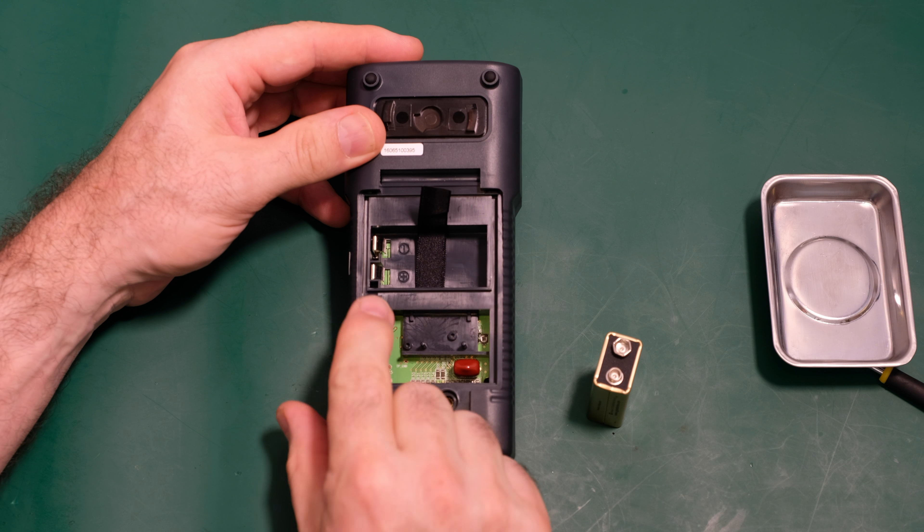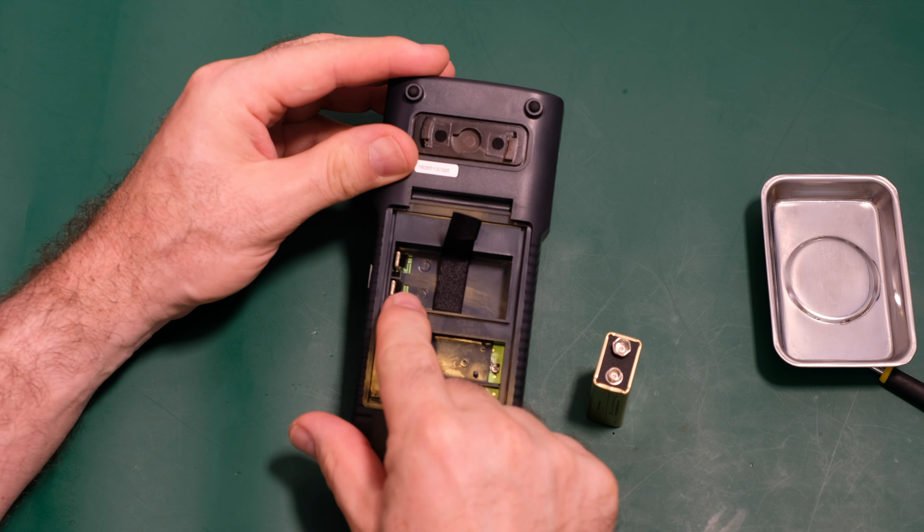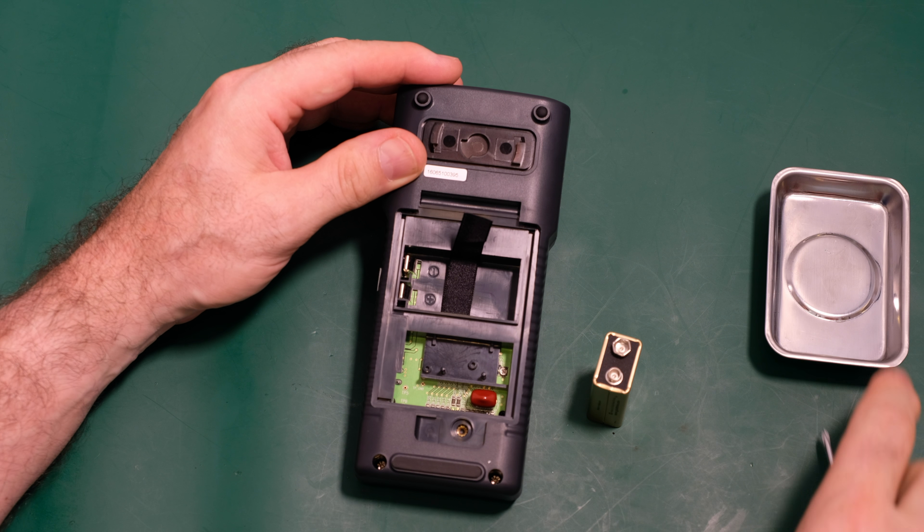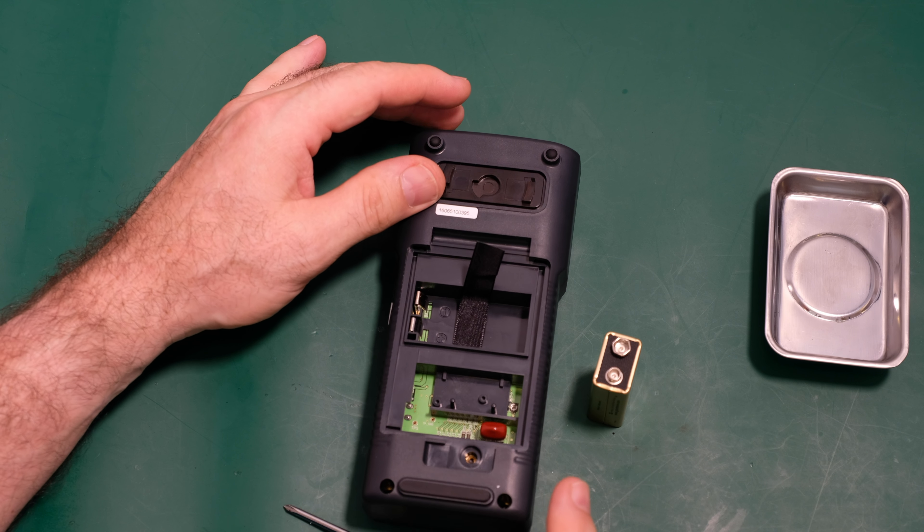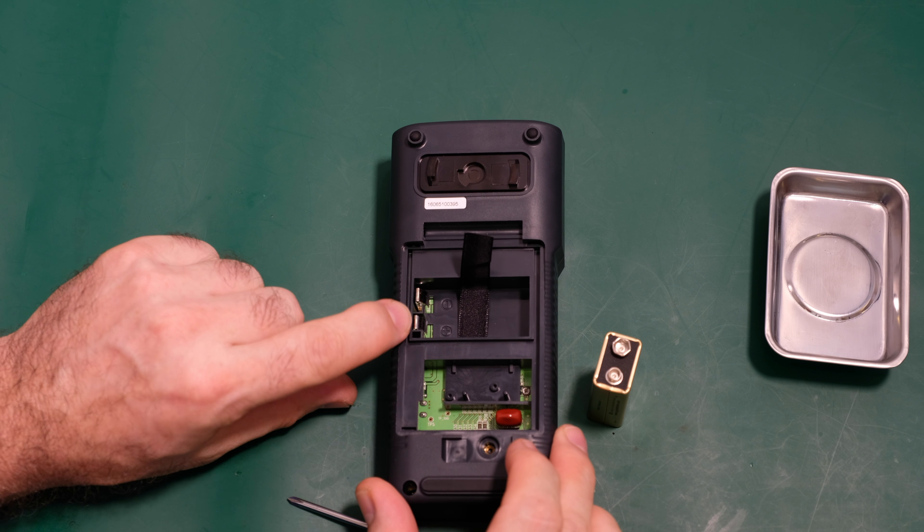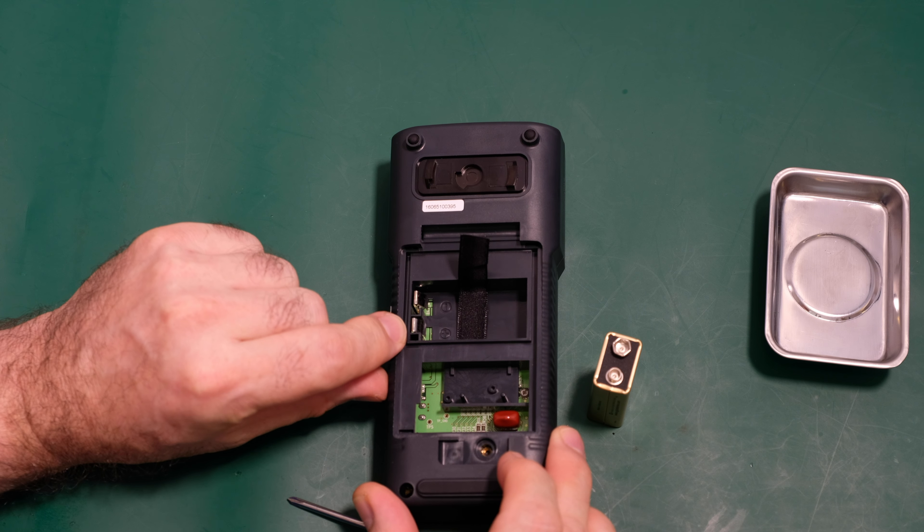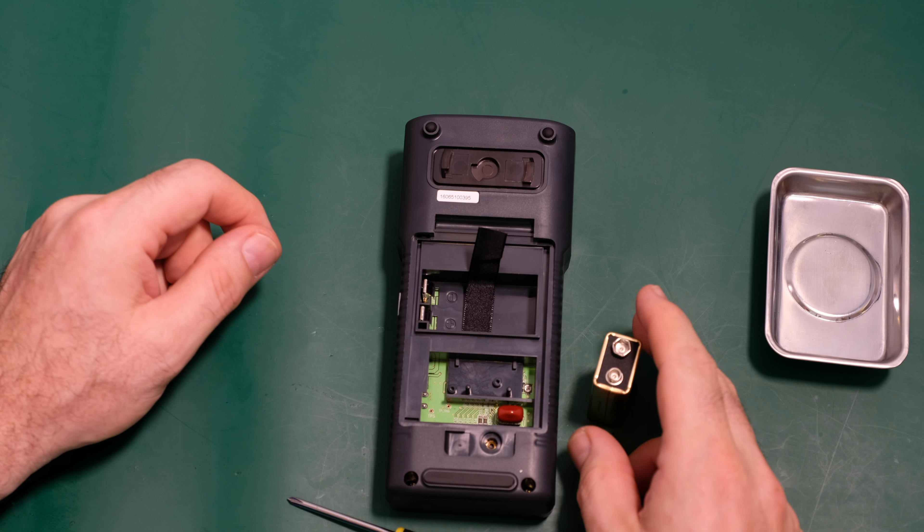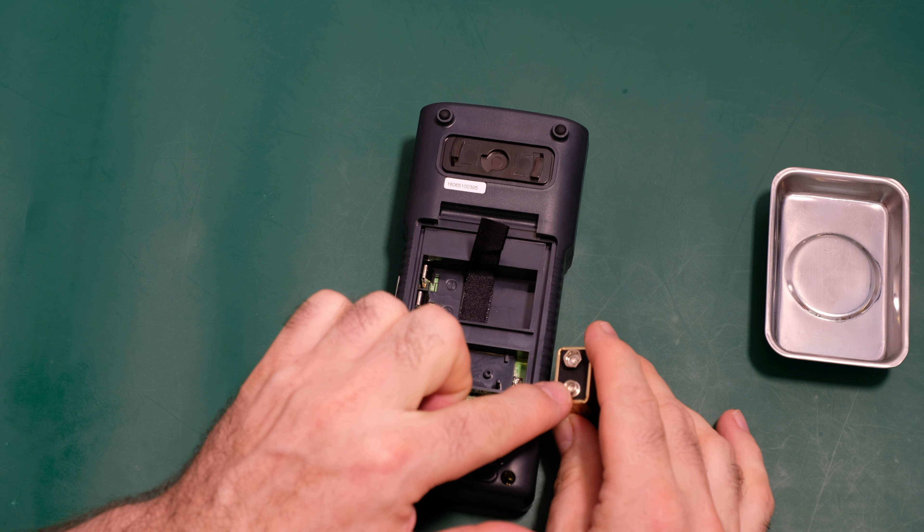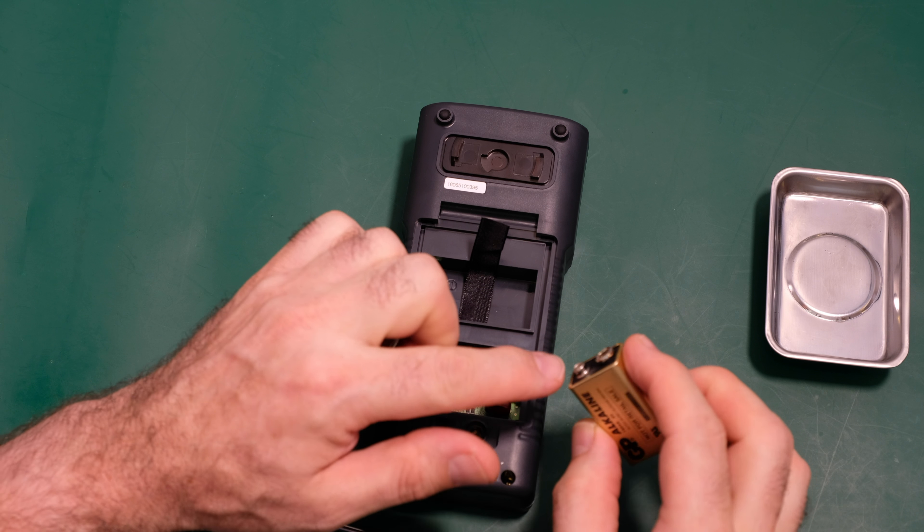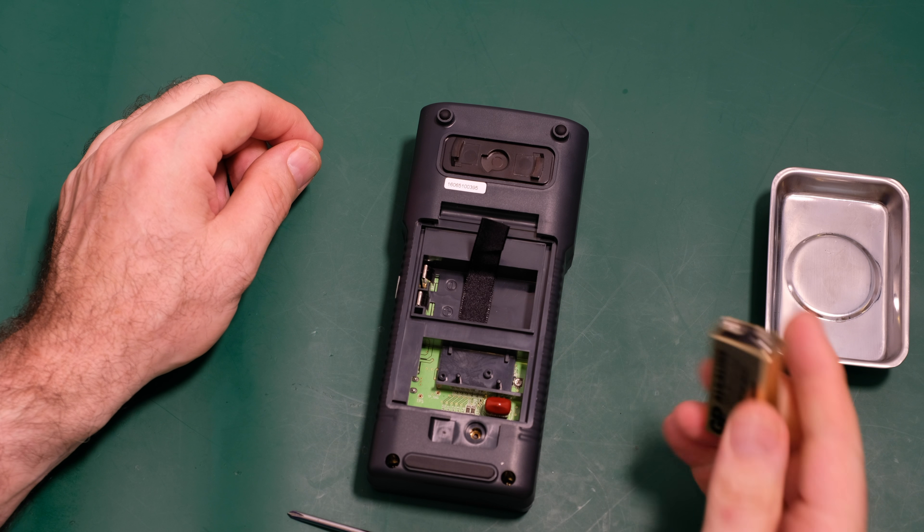So you do notice inside here it actually does have a guard here to prevent the battery being inserted the wrong way round. You have these plastic protrusions here around the positive terminal because of course the positive terminal on the battery is smaller than the negative, so it will not go in the wrong way round.